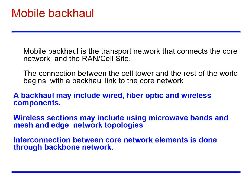Mobile backhaul is the transport network that connects the core network and the RAN or cell site. The connection between the cell tower and the rest of the world begins with a backhaul link to the core network. A backhaul may include wired, fiber optic, and wireless components. Wireless sections may include using microwave bands and mesh and edge network topologies. Interconnection between core network elements is done through the backbone network.